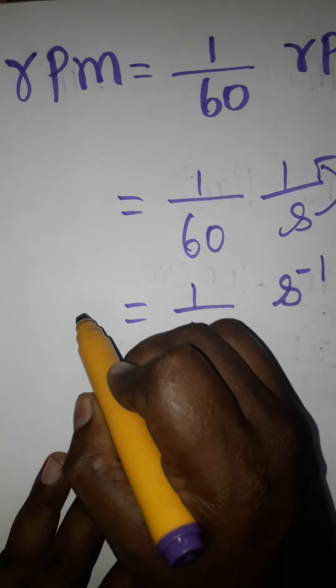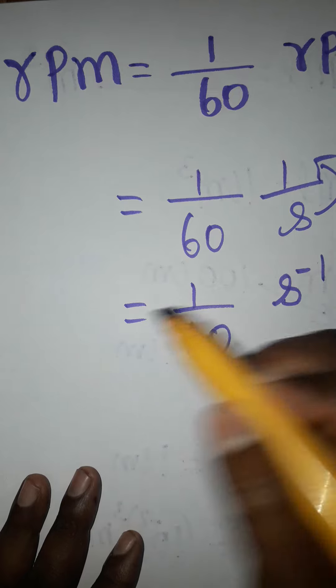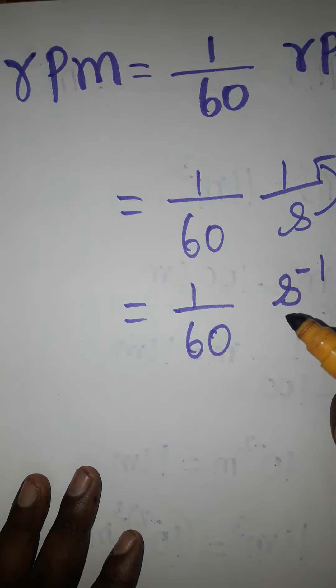So 1 RPM is equal to 1 divided by second, that is, we can take it as second inverse.